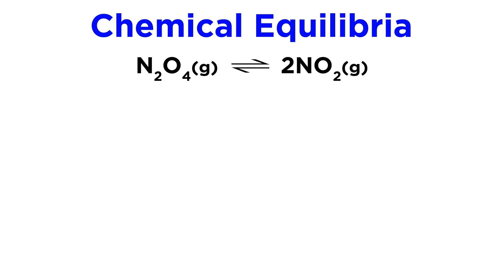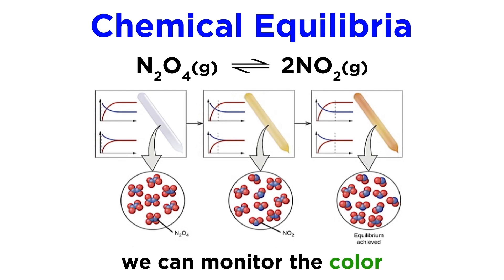This is the case with dinitrogen tetroxide, or N2O4, which will decompose to form nitrogen dioxide, NO2, which can then recombine to form the reactant again. We can monitor this reaction because the reactant is colorless while the product is brown, so as the reaction initially proceeds in the forward direction, it will become darker until it reaches equilibrium.